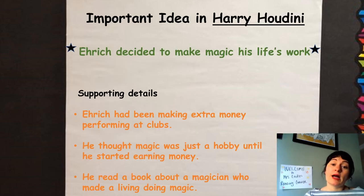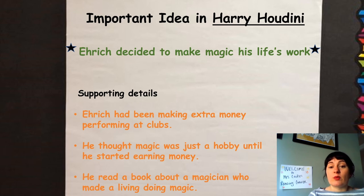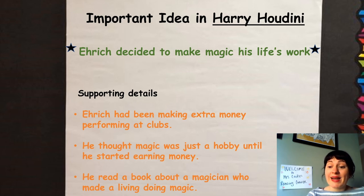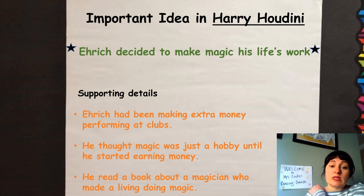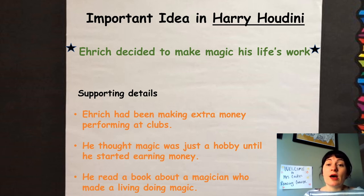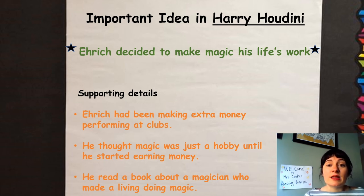One of the important ideas from our chart, I took and put here as an idea we can expand on — this is what we'll do when we start working on our summary. We'll use important ideas to create our summary. Here's one: Enric decided to make magic his life's work. Some details leading up to that support this idea: he had been making extra money performing at clubs and for friends, and he thought magic was just a hobby — that changed when he read the book about the French magician. Those details support this important idea, which we will include when we build our summary about Harry Houdini, Master of Magic.